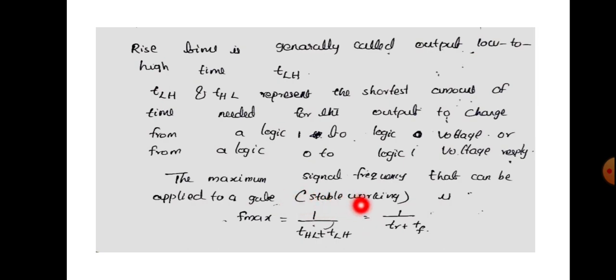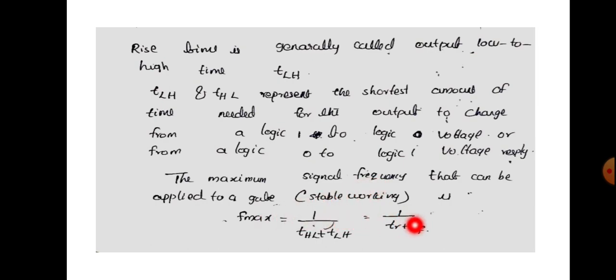The maximum signal frequency is 1 by (T_R plus T_F), which is the inverse sum of rise time and fall time. That is all about this topic on rise time. Thank you.